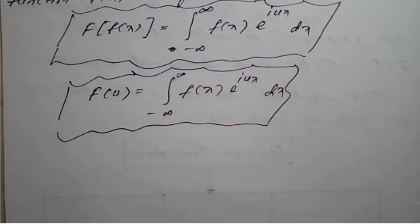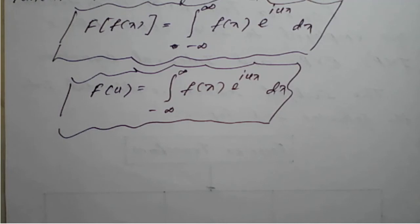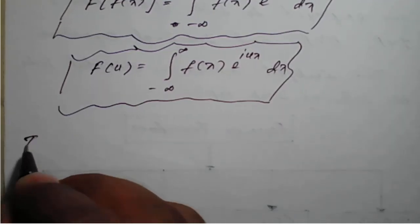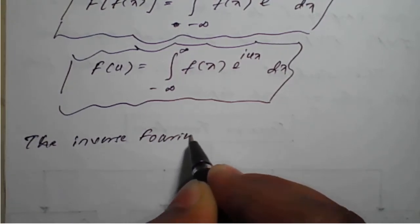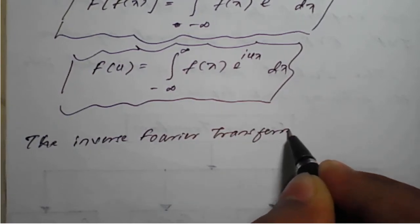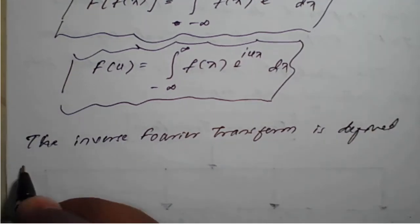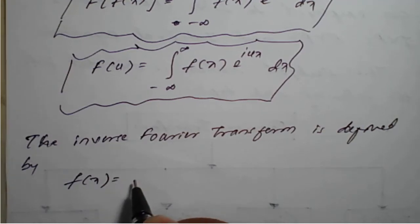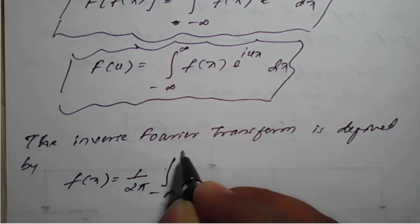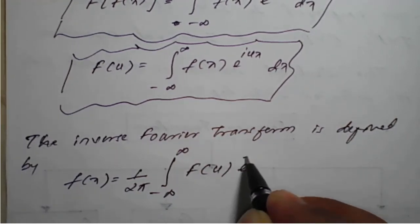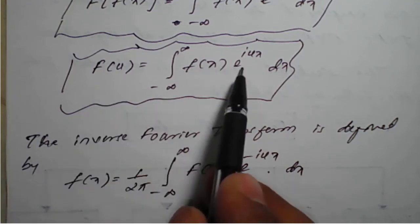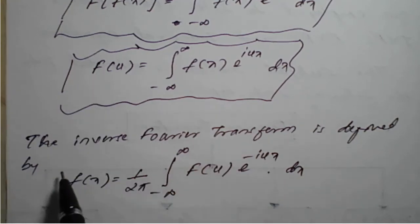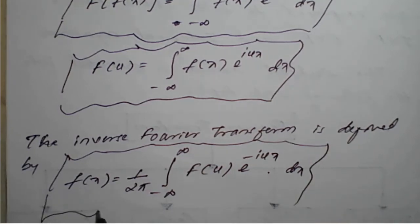Fourier transform and inverse Fourier transform: the inverse Fourier transform is defined by f of x equal to 1 upon 2 pi, integration from minus infinity to plus infinity, capital F of u into e raised to minus i u x into du. This is the reverse part — shifting e raised to i u x to the left-hand side makes it e raised to minus i u x. This is the formula for the inverse Fourier transform.